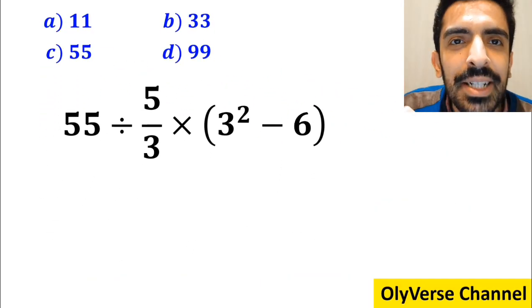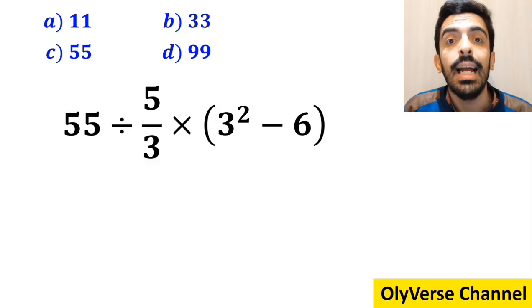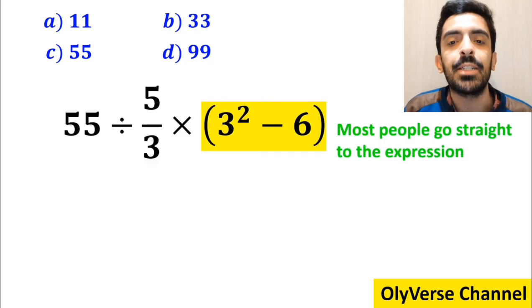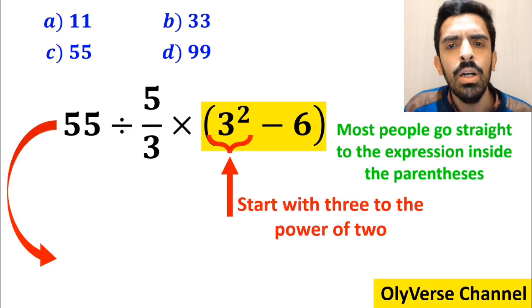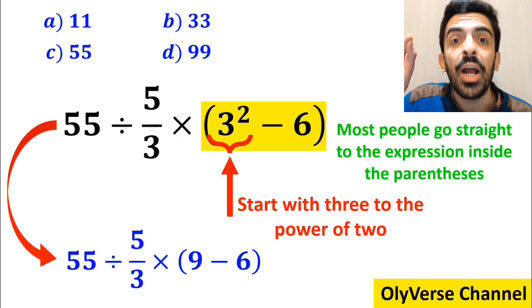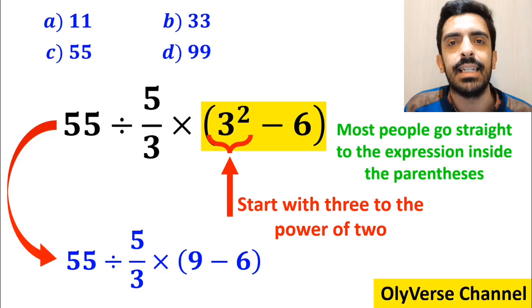Let's dive in and break it down step by step together. In the first step of solving this question, most people go straight to the expression inside the parenthesis and start with 3 to the power of 2. So, instead of the original expression, they write it as 55 divided by 5 over 3 multiplied by 9 minus 6 inside the parenthesis.